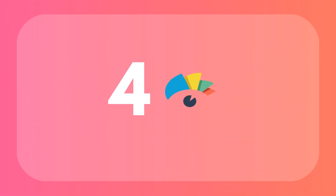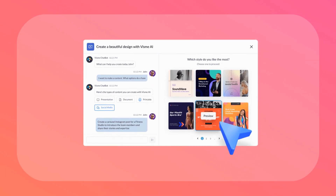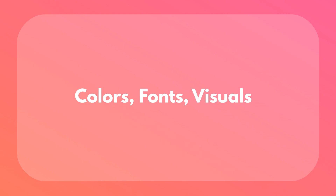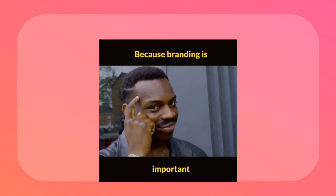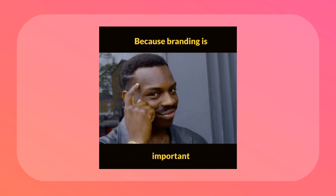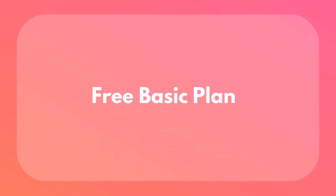If visuals are your thing, then Visum is where it's at. Visum's AI social media post generator lets you create and customize stunning social media posts with just a few text prompts. The customization options are awesome — you can personalize everything from color themes to fonts to visual elements. And if you're all about brand consistency, Visum's brand kit feature lets you incorporate your brand colors, fonts, and assets into all your content. Visum's pricing starts with a free basic plan for beginners, and then you can upgrade to paid plans that give you even more features.